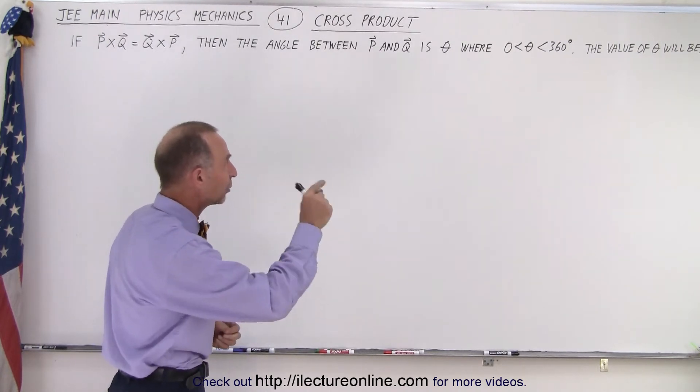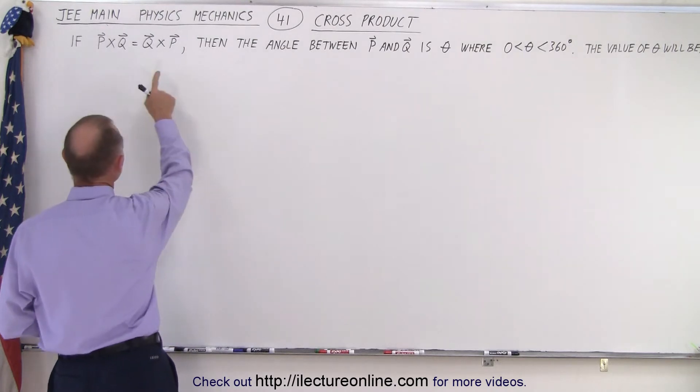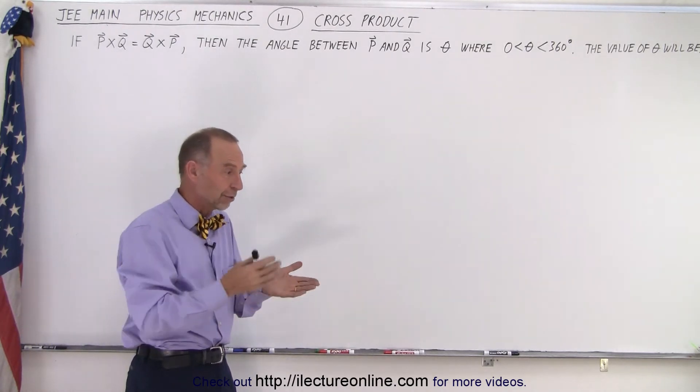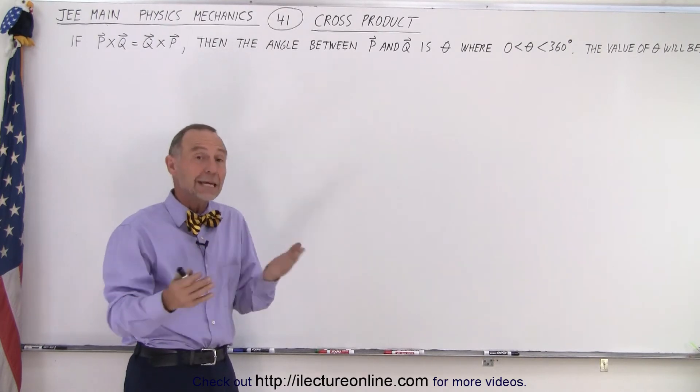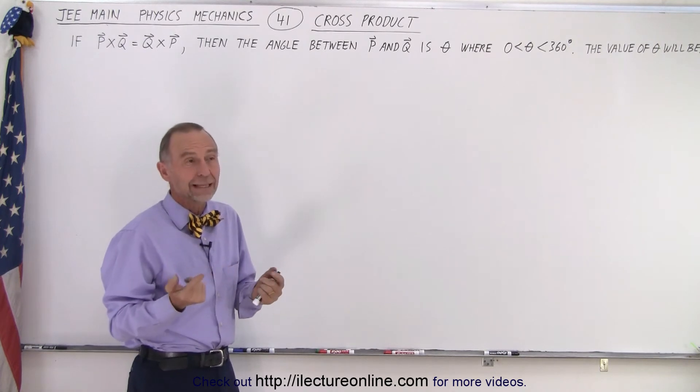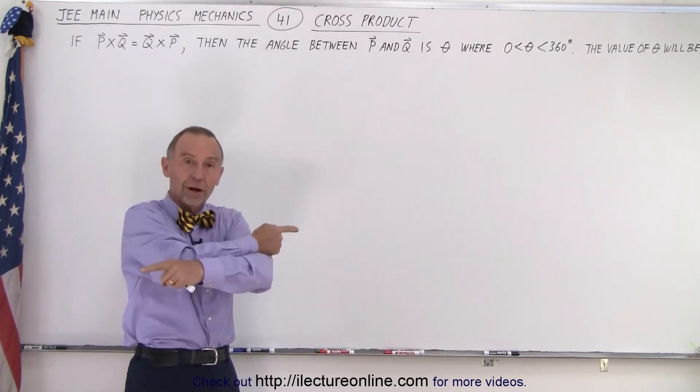So what is the value of the angle required to make this equal to one another? Because we know that the cross product of P cross Q cannot be equal to Q cross P. What is the difference between the two? Well, essentially, they simply point in opposite directions.